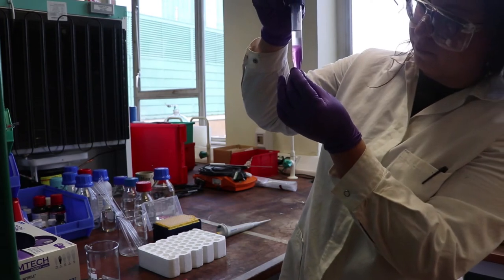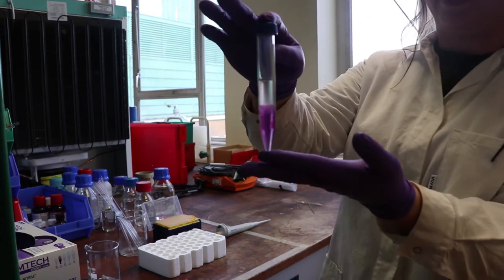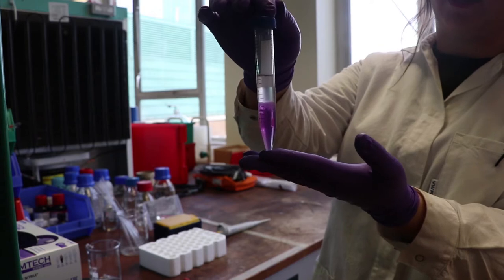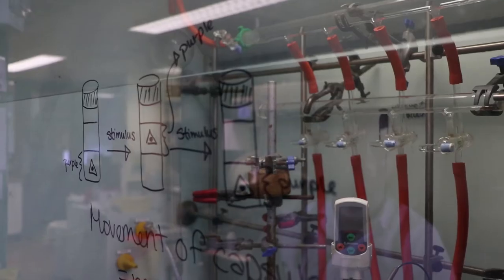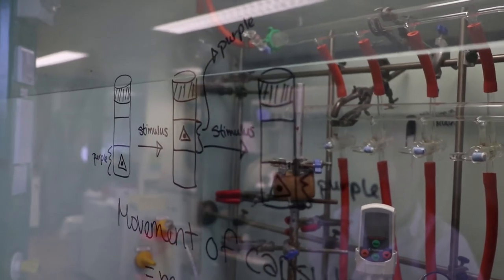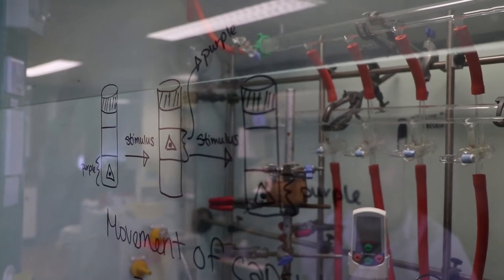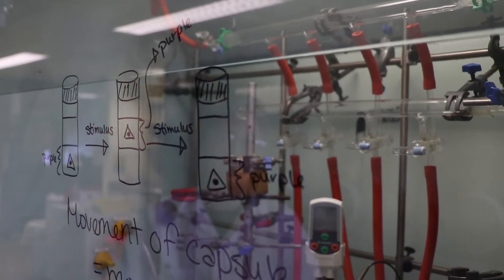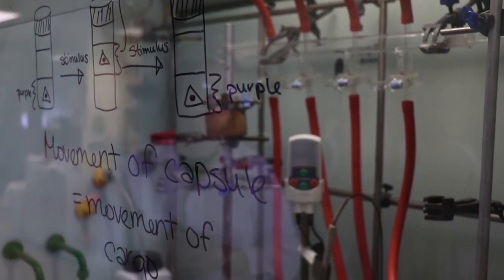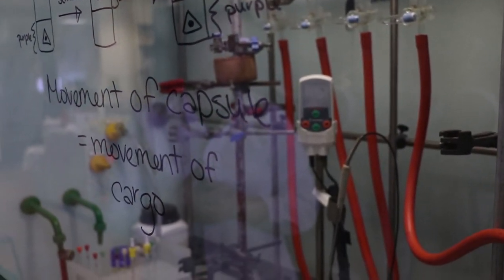So as you can see, the purple is now solely in the bottom layer, which means that the transport cycle has been completed, and the capsule has successfully migrated from the bottom layer to the top layer and back to the bottom layer, illustrating the perfect control we have over the movement of the cage and its cargo.